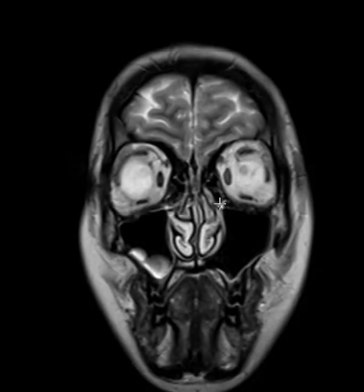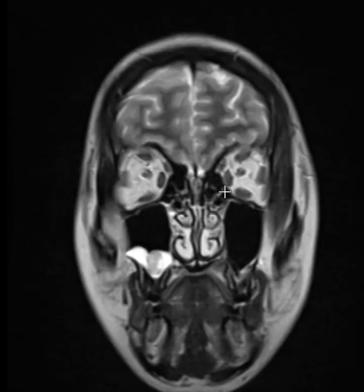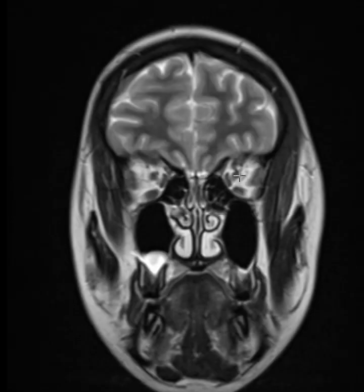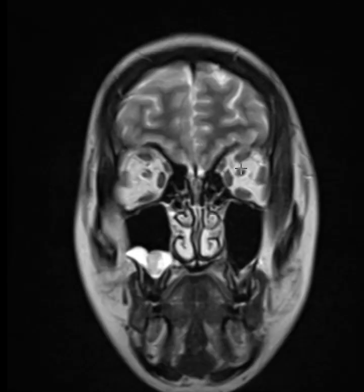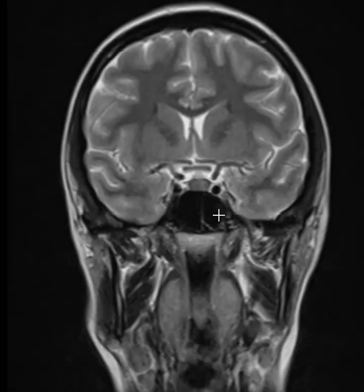Now we're looking at the orbits again on a coronal view. We can see the right orbit with all the extraocular muscles: superior, inferior, medial, and lateral rectus, as well as the superior oblique muscle. Right in the middle, that dot is the optic nerve. There is no abnormal signal, no evidence of optic neuritis or demyelination, and no distension of the nerve sheaths — everything looks good. There is a small retention cyst in the maxillary sinus, which is probably of no clinical significance.